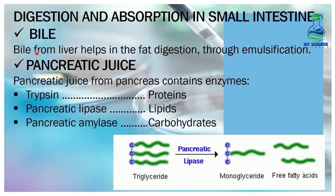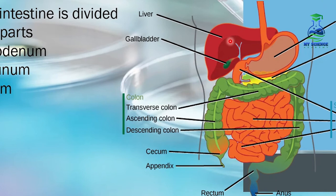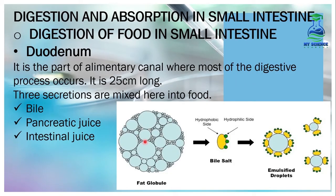Bile from the liver helps in fat digestion through emulsification. Bile is formed in the liver, but its storage is in the gallbladder. Then it is released into the duodenum portion of the small intestine. Emulsification of fat is a process through which large molecules of fat are broken down into emulsified droplets. Bile surrounds the large fat molecules and divides them into small droplets. The remaining digestion of the fat droplets then takes place via pancreatic lipase.